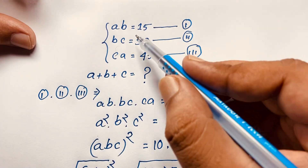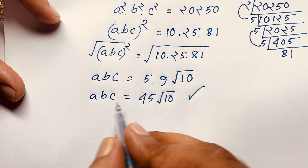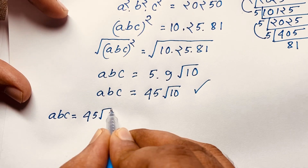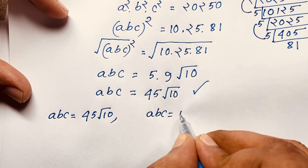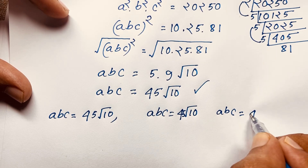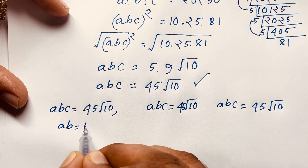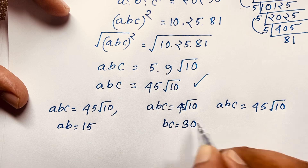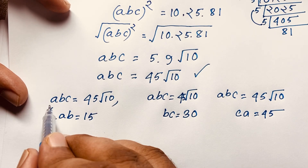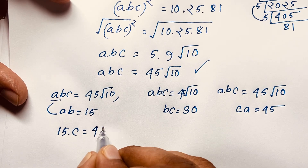Recall our equations: ab = 15, bc = 30, ca = 45. To find c, take abc = 45√10 and substitute ab = 15, giving 15 × c = 45√10.